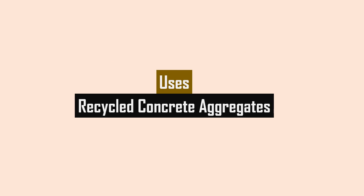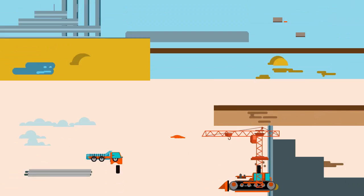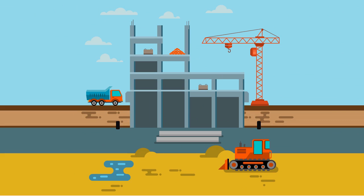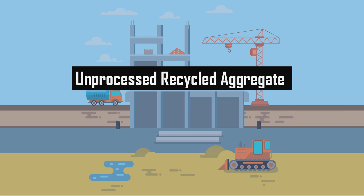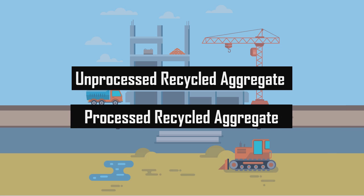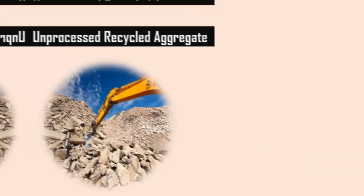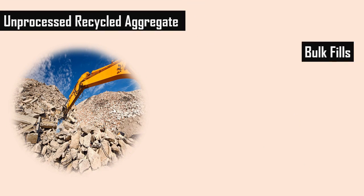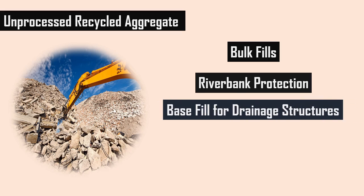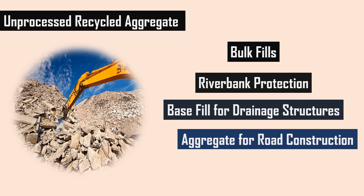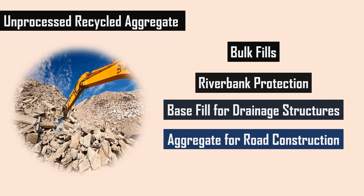Recycled concrete aggregate has a wide variety of uses in the field of the construction industry. The uses are grouped into two categories: unprocessed recycled aggregate and processed recycled aggregate. Unprocessed recycled aggregates are used for bulk fills, riverbank protection, base fill for drainage structures, aggregate for road construction, etc.